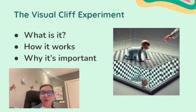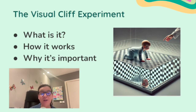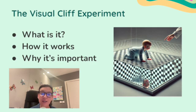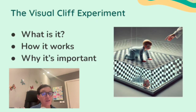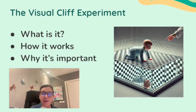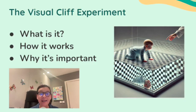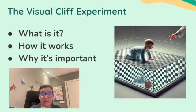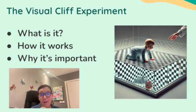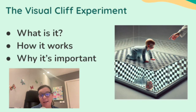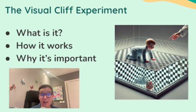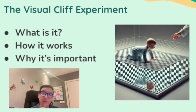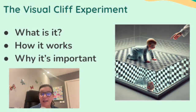Here's how the visual cliff experiment works: a baby is placed on a platform with a visual cliff — one side of the surface is solid and patterned, while the other side has a glass surface under which a patterned drop-off creates the illusion of a cliff. Babies who perceive depth hesitate or refuse to crawl across the glass, even though it's safe, while babies without depth perception might crawl across without concern. Most babies, especially those who have started crawling, show hesitation, indicating they can perceive the cliff. This study shows that depth perception begins developing in early infancy, often coinciding with crawling. It also helps us understand how infants learn to process and respond to visual information, and highlights how infants learn to interpret their environment, shaping behaviors like exploring, avoiding danger, and developing spatial awareness. The visual cliff experiment is a landmark study in developmental psychology, showing us how infants perceive and interact with the world.